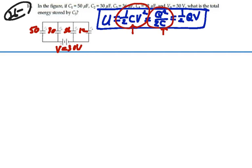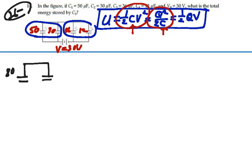Let's simplify the circuit a little bit. We have a 50 and a 30 in parallel, and a 36 and a 12 in parallel. So adding those together means that our new circuit looks like this: 80 microfarads here, 48 microfarads over here, and a 30 volt battery.